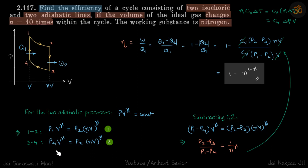At this point, P4 times V^gamma equals P3 times (nV)^gamma. Now we can find this ratio. If we subtract these two equations, we get (P1 minus P4) times V^gamma equals (P2 minus P3) times (nV)^gamma. V^gamma will cancel, and we get the ratio (P2 minus P3) by (P1 minus P4) as 1 upon n^gamma.